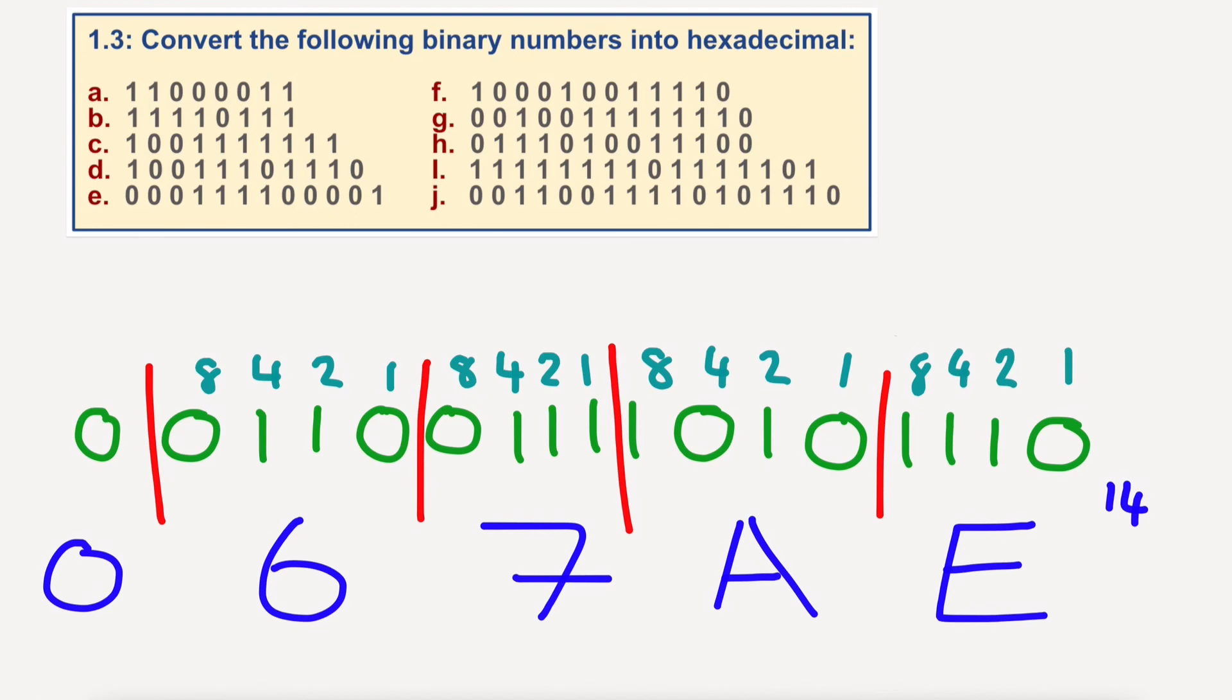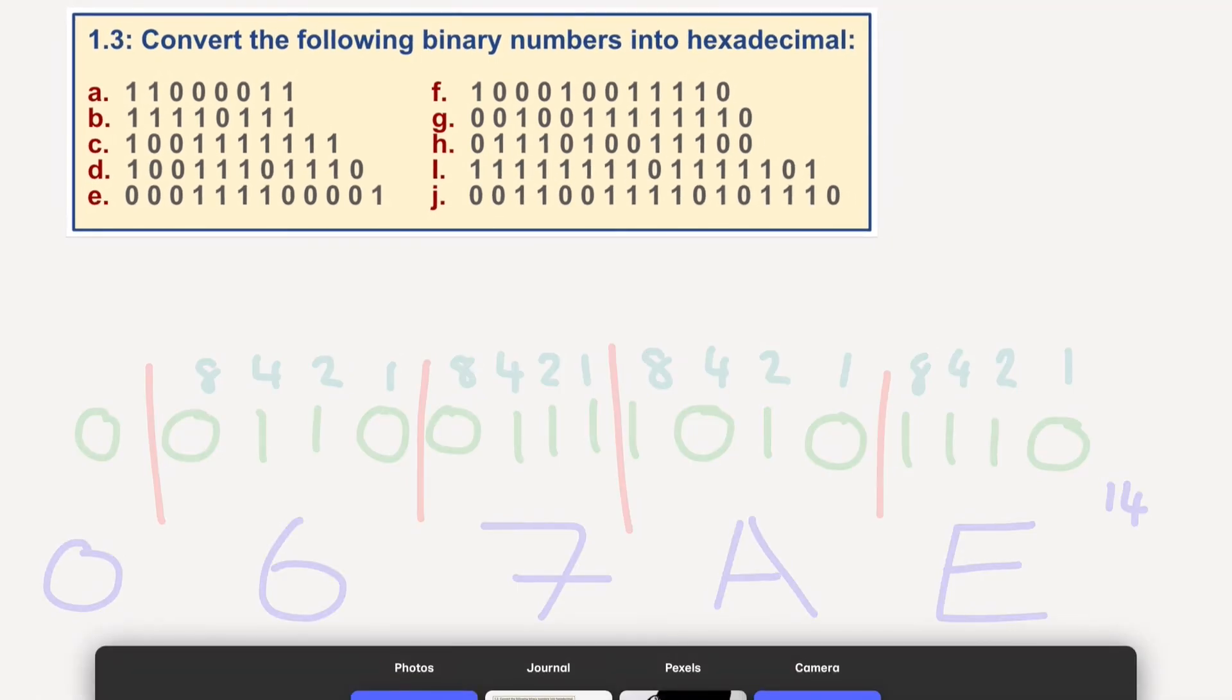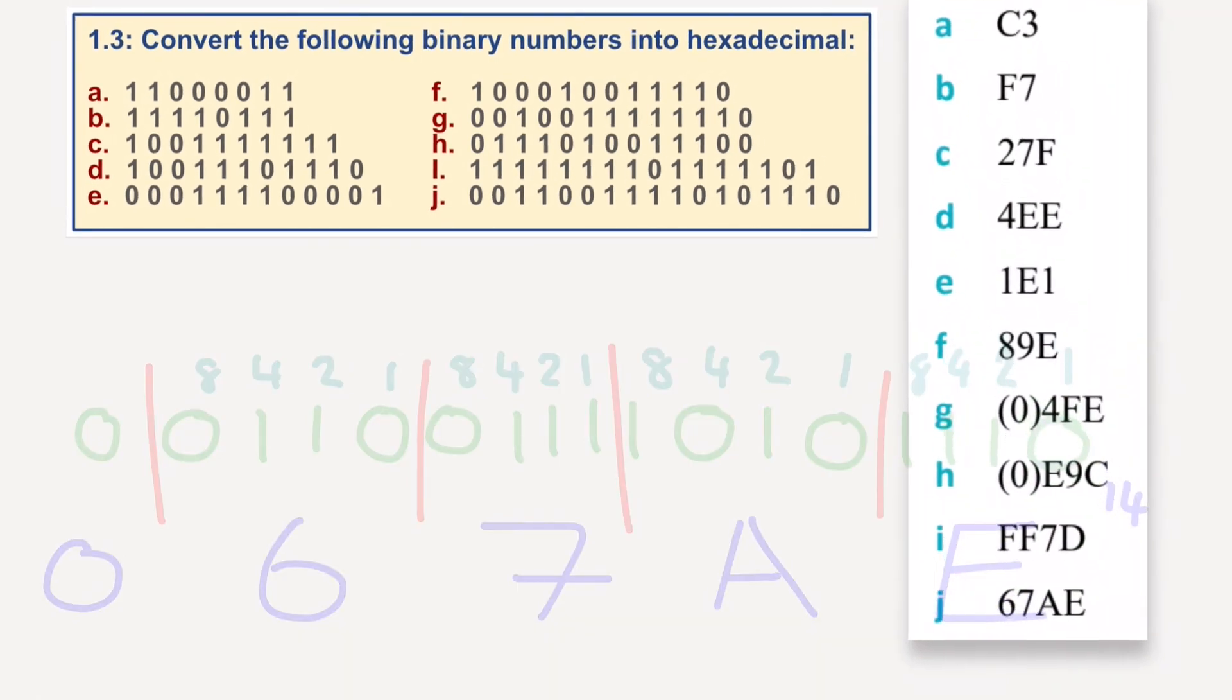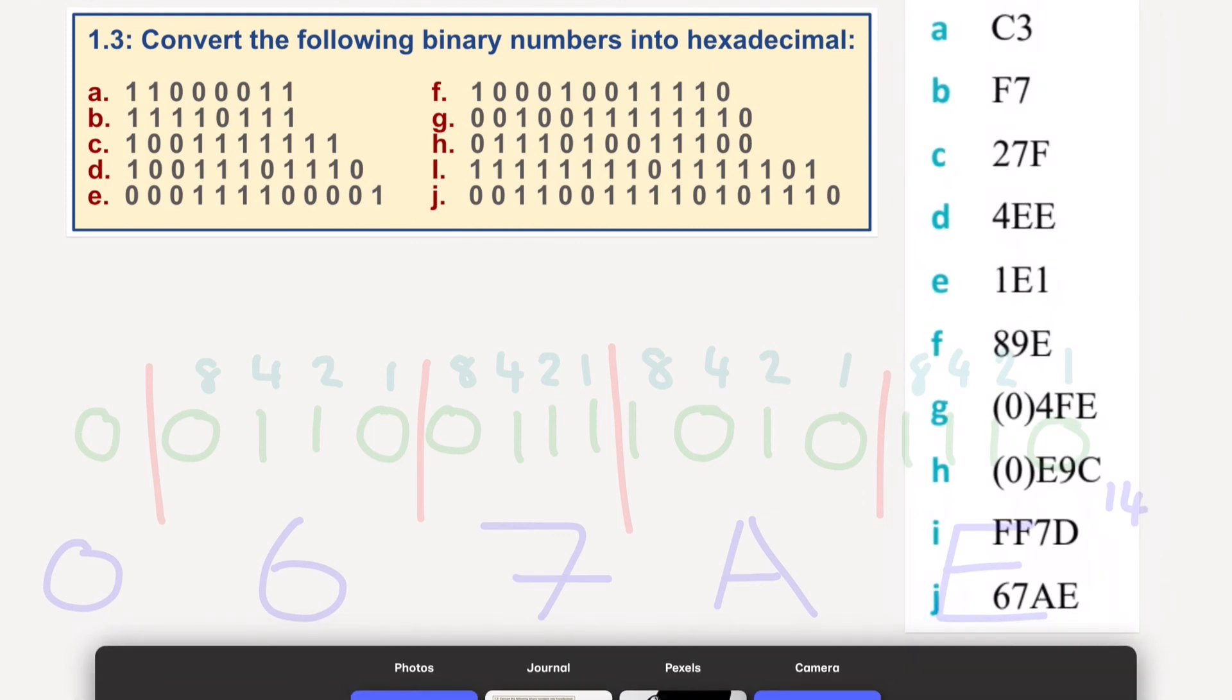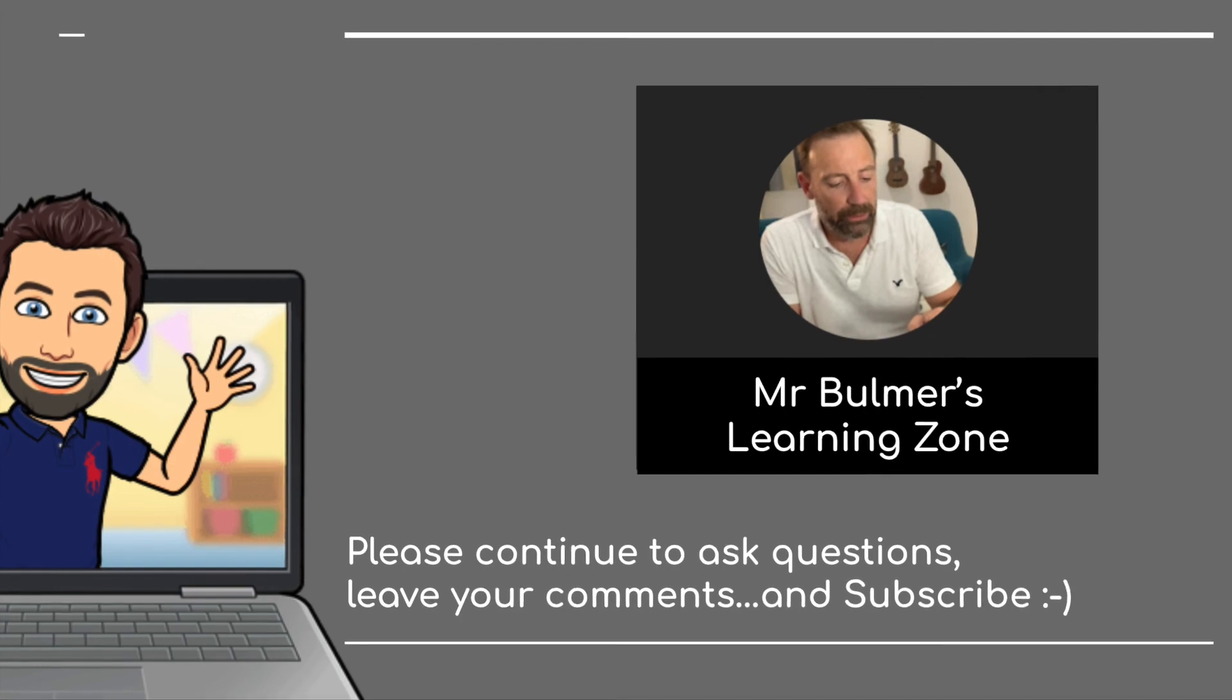Now, if I open up the answers for you, there would be our answers. So, we have C3, F7, 27F, 4EE, 1E1, 89E, 04FE, 0E9C, FF7D, 67AE, as I've just shown you there. Okay? Thank you very much indeed. Thank you very much indeed. I will see you for 1.4. Thank you.